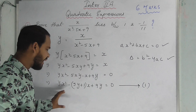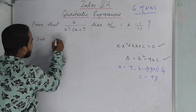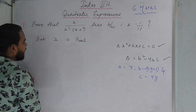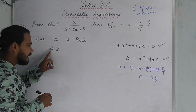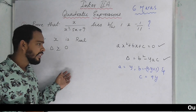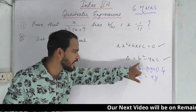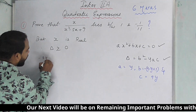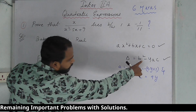Since x is real, the discriminant must satisfy: delta greater than or equals to 0. This is very important. Substituting: b squared minus 4ac gives minus (5y plus 1) whole squared minus 4 times y times 9y greater than or equals to 0.